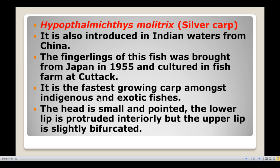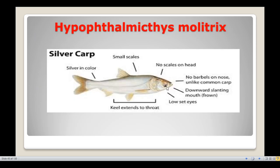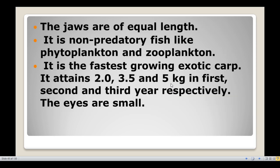The head is small and pointed. The lower lip is protruded anteriorly, while the upper lip is slightly bifurcated. The jaws are of equal length. The eyes are small. It is a non-predatory fish that feeds on phytoplankton and zooplankton, as well as protozoans, rotifers, and some vegetable matter.